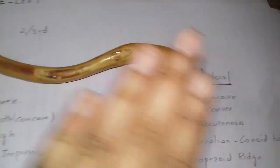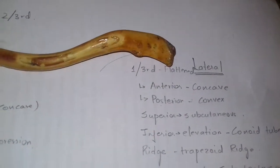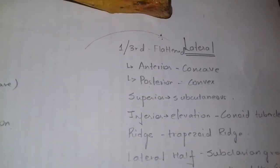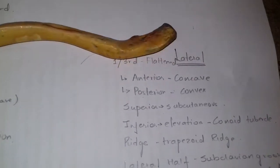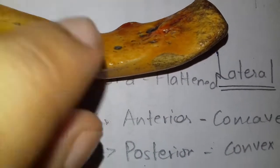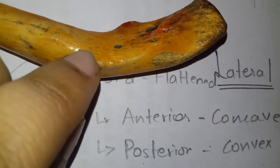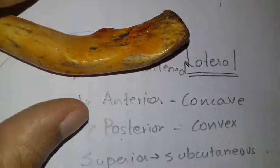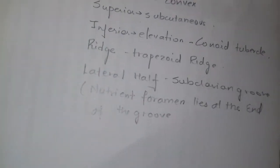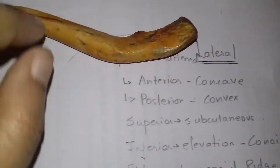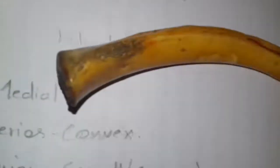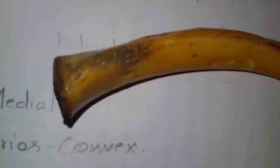The superior surface is subcutaneous. The inferior surface has an elevation called the conoid tubercle and a trapezoid ridge, along with a subclavian groove. There is also the oval impression on the inferior aspect.